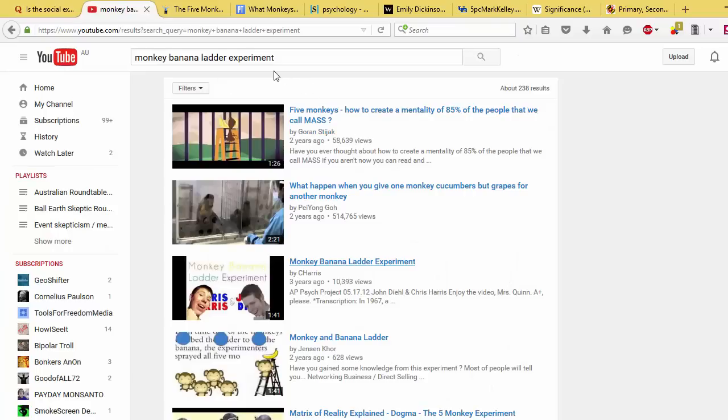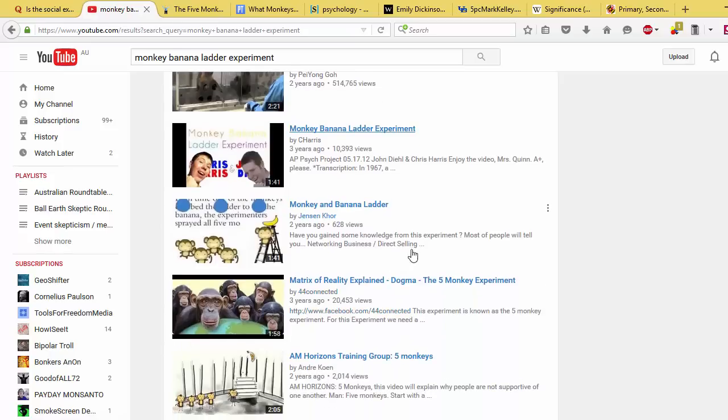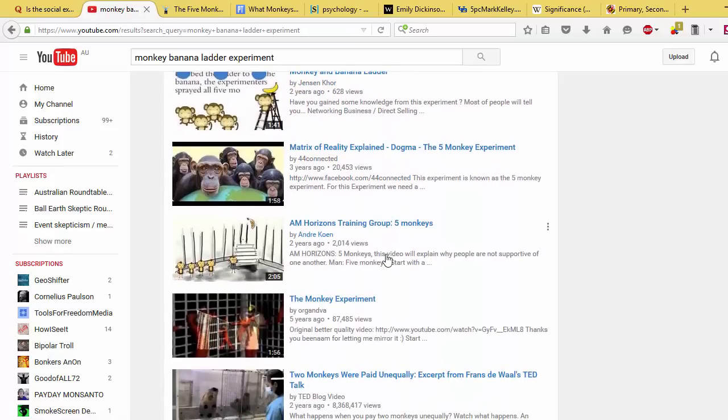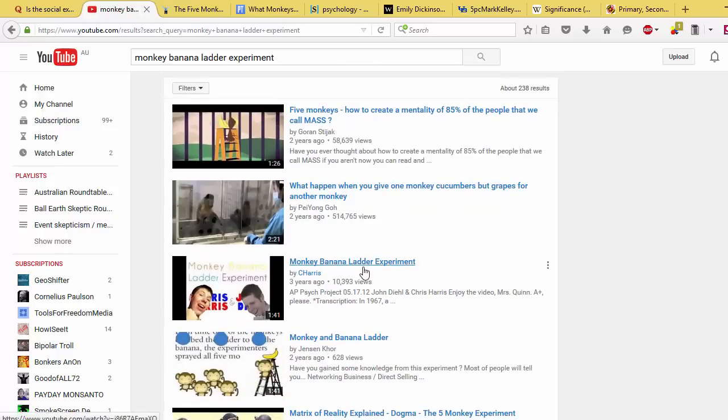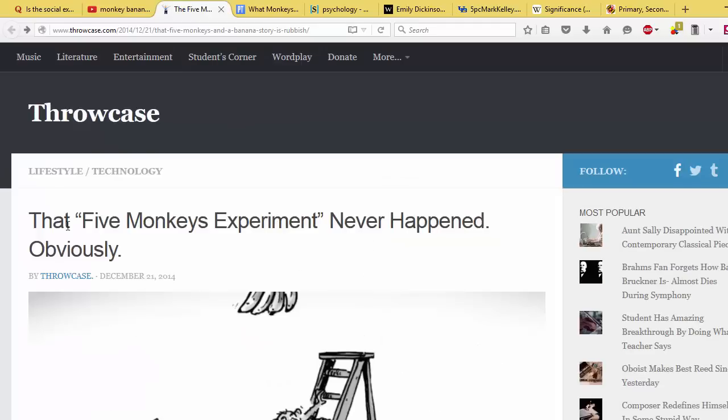Now if you type in 'monkey banana ladder experiment' into YouTube, you'll get a whole bunch of results, some pretty good illustrations. A number of people have taken the time to try and show how the experiment worked with their own videos. And it's all very interesting and it seems like it's useful, but there's one major problem. The five monkeys experiment never happened.